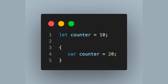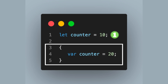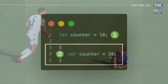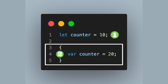Let us look at another case. In this very simple piece of code, we declare a variable counter using the let keyword. Then we introduce curly braces to create a scope. Within that scope, we declare the counter variable once again, this time using the var keyword. When we run this program, we get an error — specifically a syntax error saying: identifier counter has already been declared.